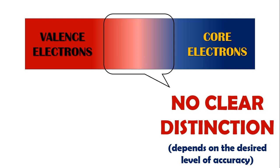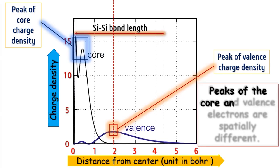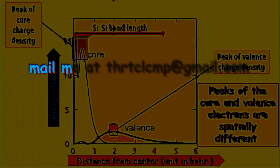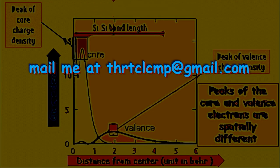When in doubt, an inspection of the spatial extent of all the atomic wave functions might help. Take this figure, for example. By looking at the spatial variations of the electron densities, we can easily distinguish the core and the valence electrons.